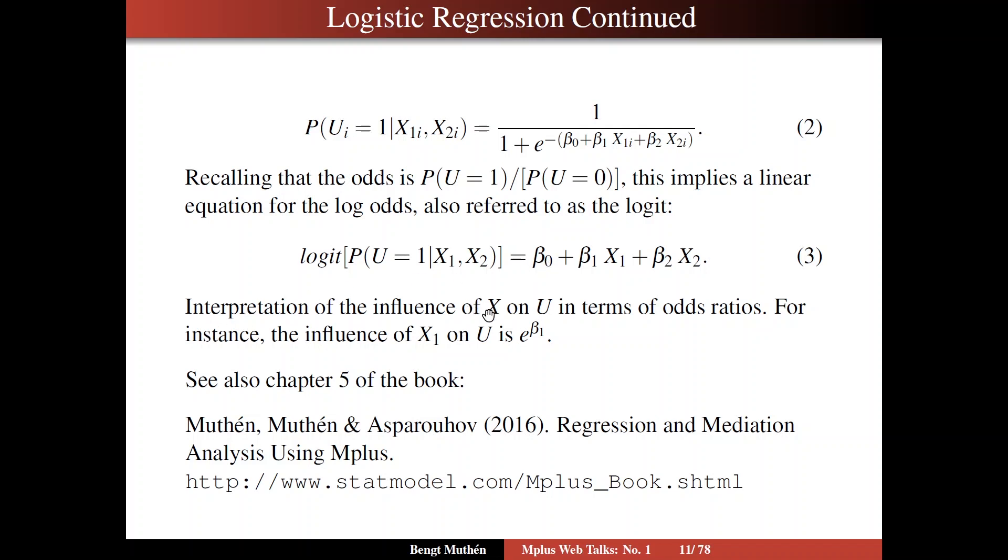Now, you interpret the influence of x on u in terms of odds ratios. So to get an odds ratio, since you have log of something here, you take the exponent, you exponentiate it, and therefore log and exponentiation cancel each other out. So you will have the exponentiation of this expression, and that implies that the influence of x1 on u, for instance, is e to the power of beta 1. So it relates being a smoker versus not a smoker to getting lung cancer versus not lung cancer. So an odds ratio is the relationship between two variables.